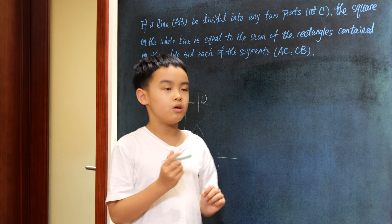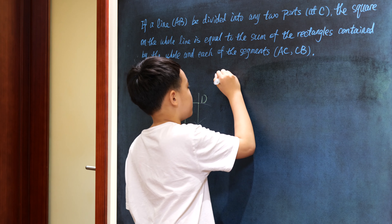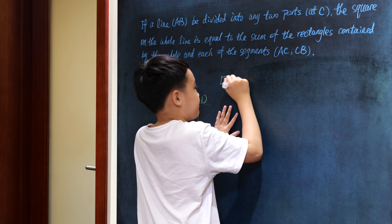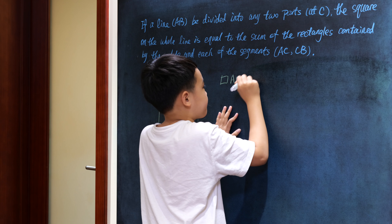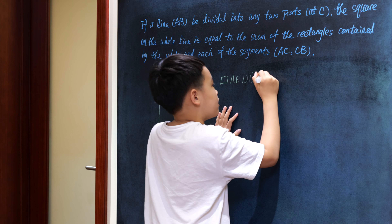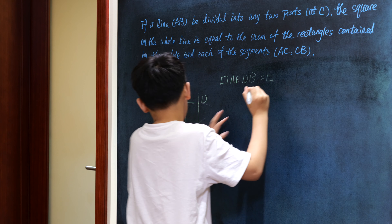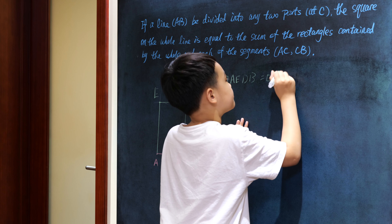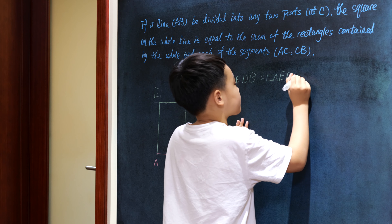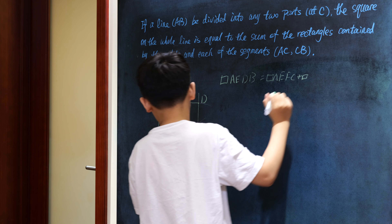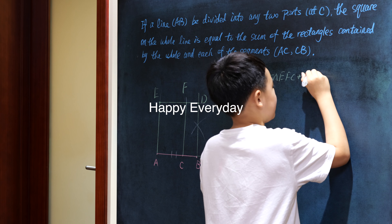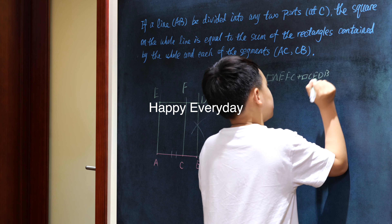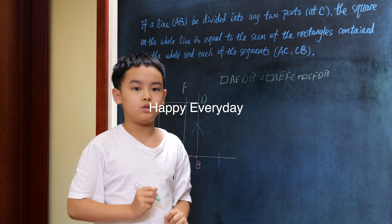Now, let's check it out. We have square A, E, D, B equal to the sum of two rectangles. One is A, E, F, C and another one is rectangle C, F, D, B — the sum of the two.